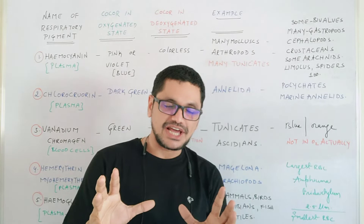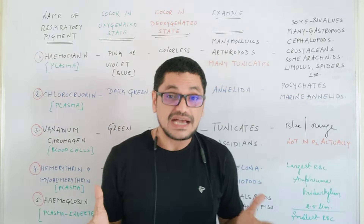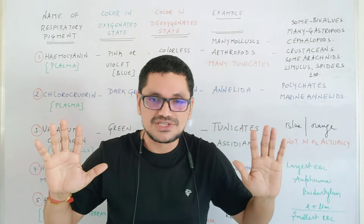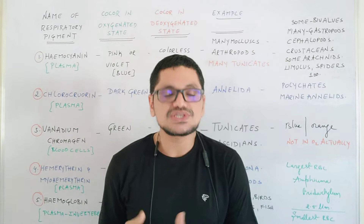Generally the blood is red in color in vertebrates, but it is not the case with the invertebrates. In invertebrates there are different colors in blood. We cannot generally say blood is red in color in all animals — that is a wrong statement. The reason for different colorations of blood is definitely because of the respiratory pigment.